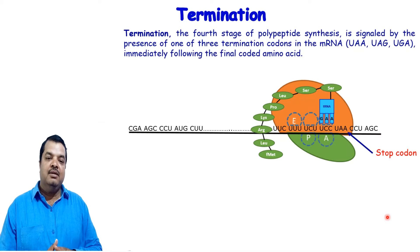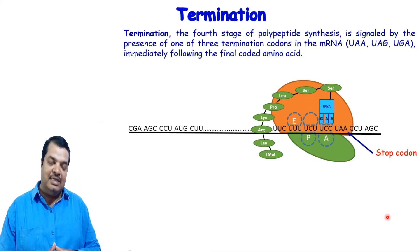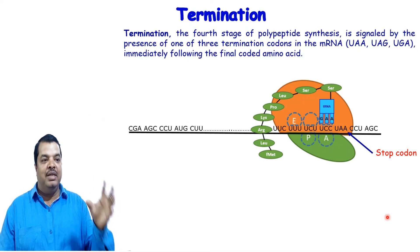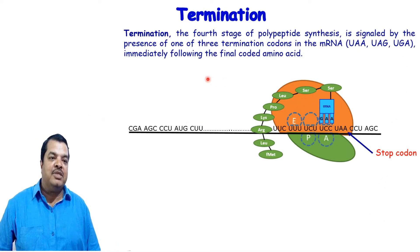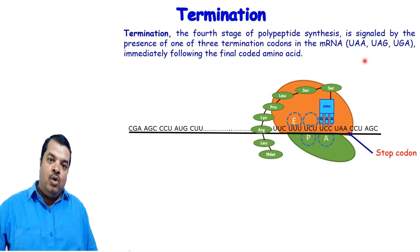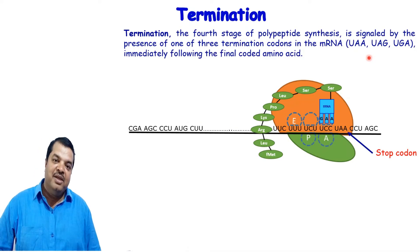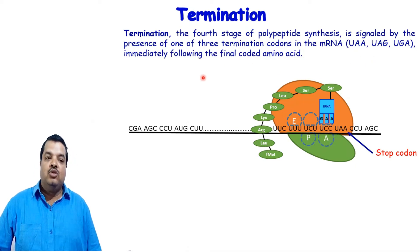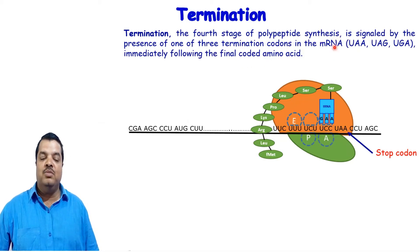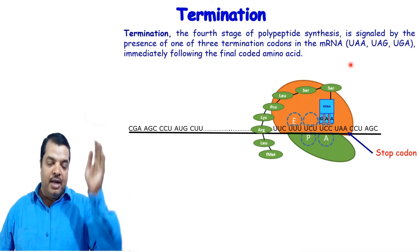Termination is the fourth stage of translation. Termination occurs when a termination codon is encountered. It is signaled by the presence of one of three termination codons in the mRNA: UAA, UAG, or UGA. Immediately following the final coded amino acid, if any one of these appears, termination occurs — meaning no further peptide bond will be formed.